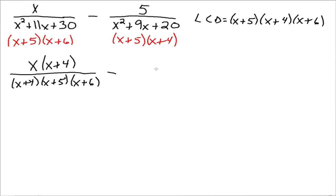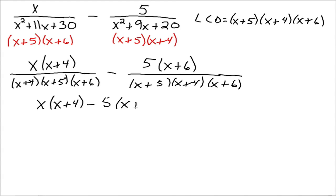Minus top and bottom of the second fraction, we need to multiply by x plus 6 all over our common denominator. Alright. And then we combine the numerators. Alright, so we've got x times x plus 4 minus 5 times x plus 6, all in the numerator, and the denominator, this long denominator x plus 5 and x plus 6.